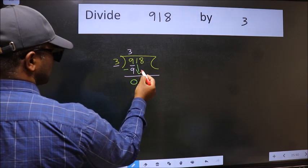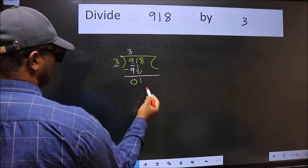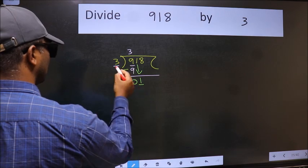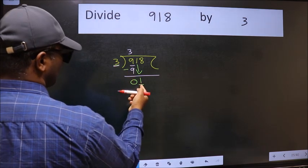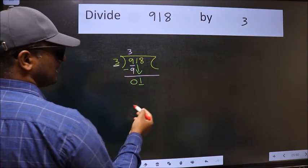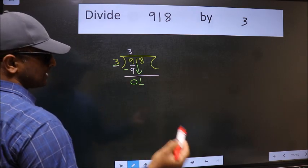After this, bring down the beside number, so 1 comes down. Now here we have 1 and here 3. 1 is smaller than 3, so we should bring down the second number.